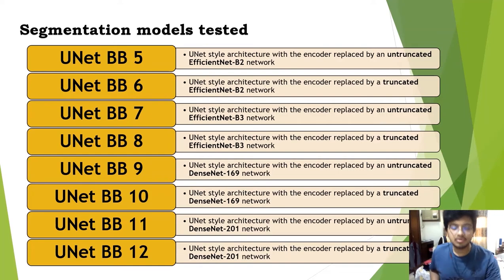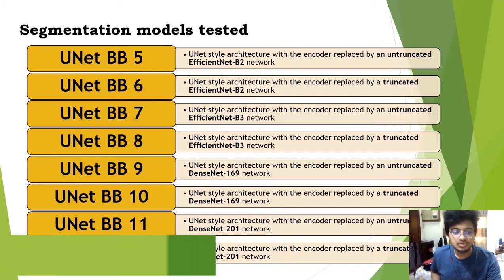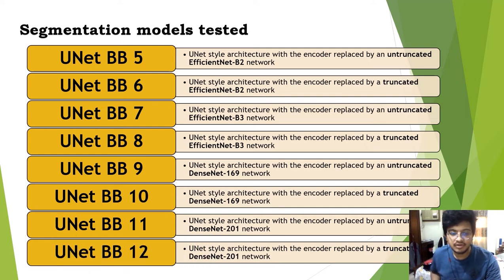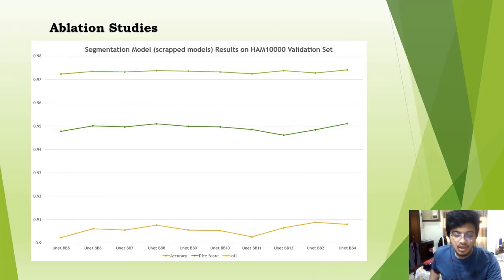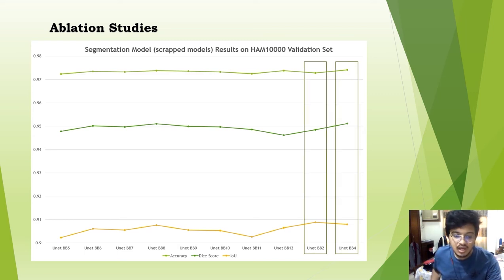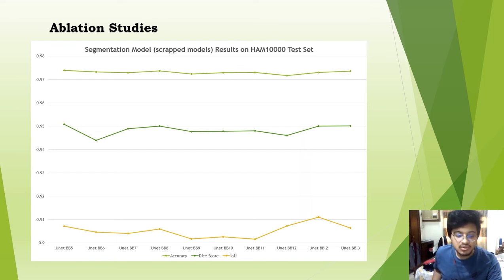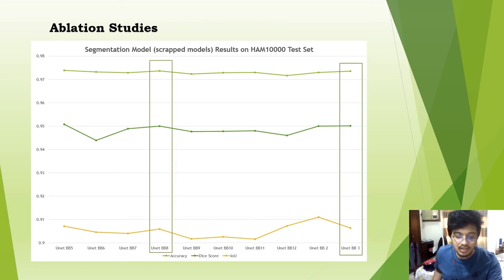We also developed and tested additional segmentation model variants. Apart from the proposed UNet-BKB1 through BKB4 models, we tried 8 other variations — UNet-BKB5 through BKB12 — all differing in the encoder. For example, UNet-BKB5 uses an untruncated EfficientNet-B2 encoder, and UNet-BKB9 uses an untruncated DenseNet-169 encoder. Looking at accuracy, DICE score, and IoU, their performance was not far behind our proposed models. On the validation set, UNet-BKB4 has the highest accuracy and DICE score, while UNet-BKB2 has the highest Jaccard index. On the test set, UNet-BKB3 has the best accuracy and DICE score, but UNet-BKB2 is the only model with a Jaccard index over 90%.